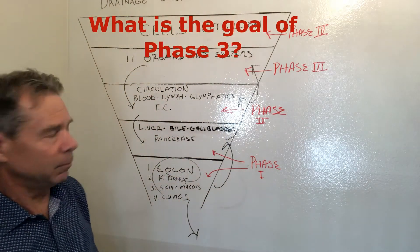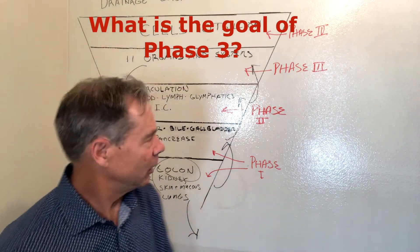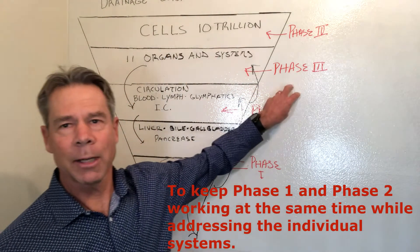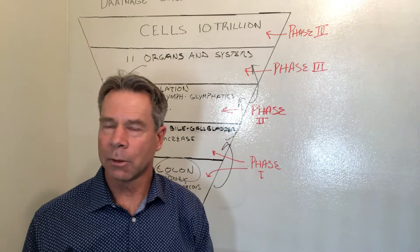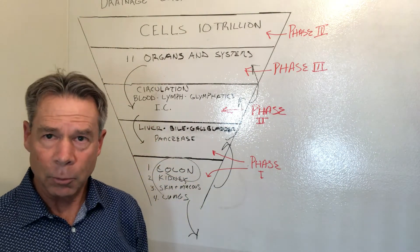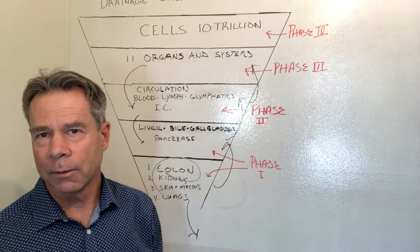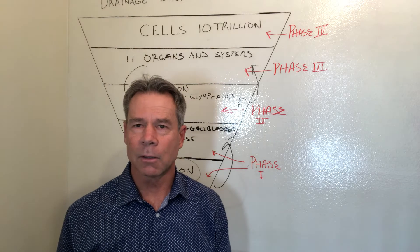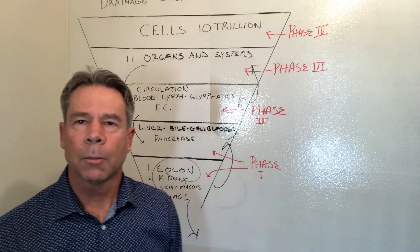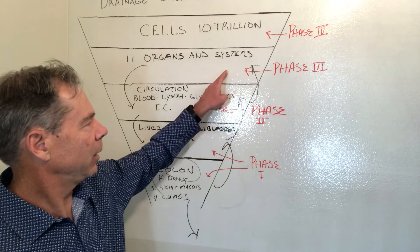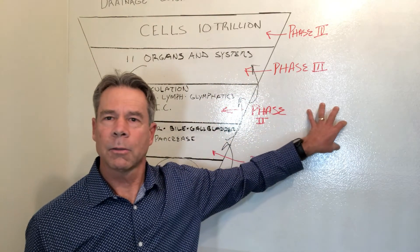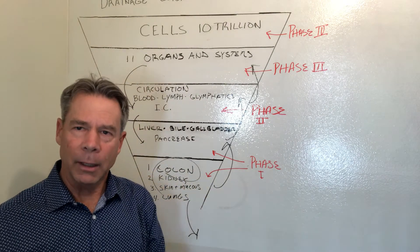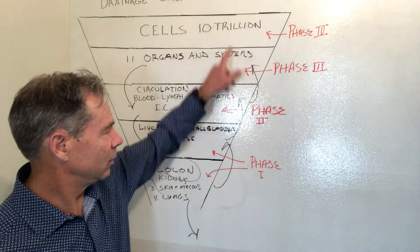So the goal of phase three is to keep phase one and phase two working at the same time as addressing the individual systems that are in need. And we do that through functional testing, as well as different supplementations that are utilized specifically for specific organs. By the time we're ready for phase three, our circulatory systems and our lymphatic systems, our glymphatic system, our interstitial spaces, are ready for the drainage of the toxins in the cell tissue.